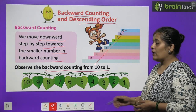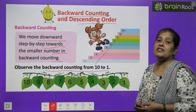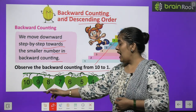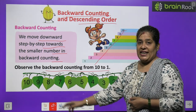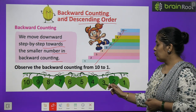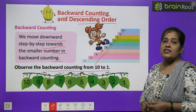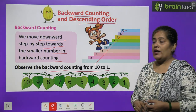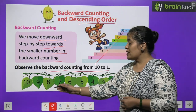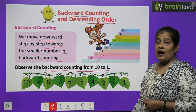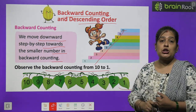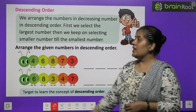Yahan pe backward counting de rakhi hai humein 10 se lekar 1 tak. Let's read: 10, 9, 8, 7, 6, 5, 4, 3, 2, and the last one is number 1. Ismein kya aaya? Sabse pehle sabse bada number, phir usse chhota, phir usse chhota, aur aise karte karte last mein sabse chhota number.